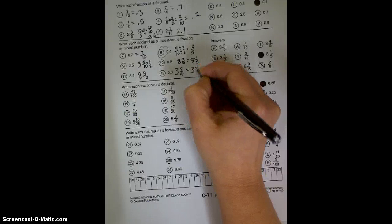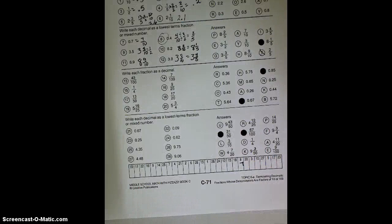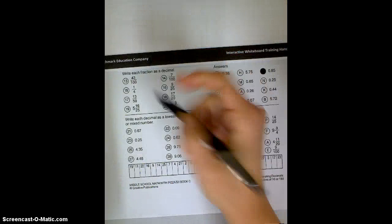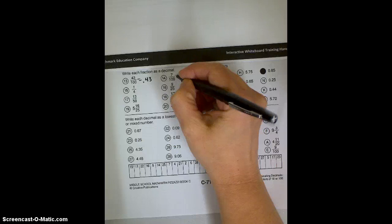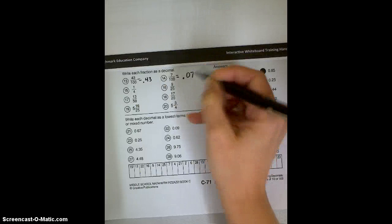Next one is asking us to write each fraction as a decimal. This time it's in the hundredths place. Let's see if I can cover up some of this so we don't get confused. This one as a decimal would be 0.43. This one as a decimal, remember we want our 7 in the hundredths place, so you need to put a 0 as a placeholder so 7 gets in the hundredths, not the tenths.